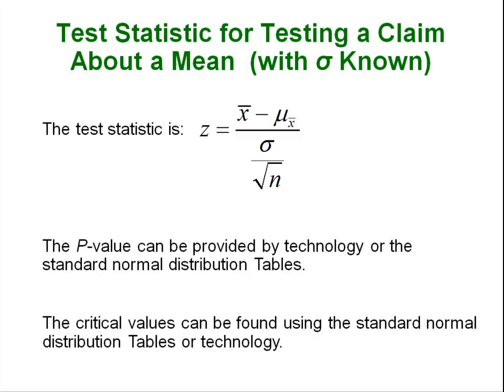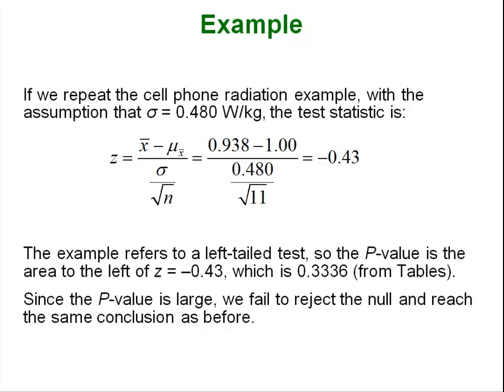Step one is the same you write your null and alternative. Step two is the same you select your alpha level. Step three is the same only now you are choosing a normal distribution with z's instead of the t distribution. You calculate your test statistic using this formula and then from there on out it's still the same. You either do the critical value method or the p-value method to determine whether or not you reject. In this case I did the p-value method got a p-value of 0.33 which if you remember from the previous example is pretty close to the p-value we had before and that's because already with a sample size of 11 the t distribution is already starting to get close to the z distribution.